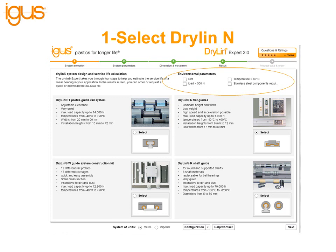At the very top, customers can enter any environmental parameters they'd like the expert system to consider. For example, if you select dirt or high load it will cancel out Dryland N. Temperatures greater than a set threshold will deselect T and N. In this case we have Dryland N, so we'll click Dryland N then click Next.